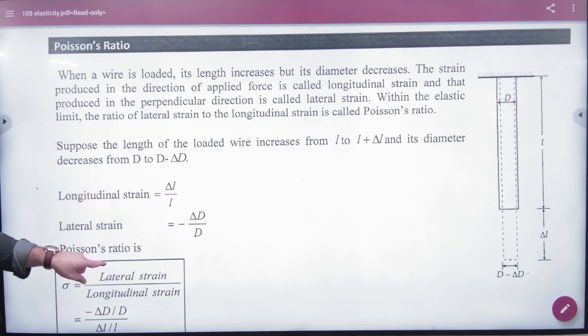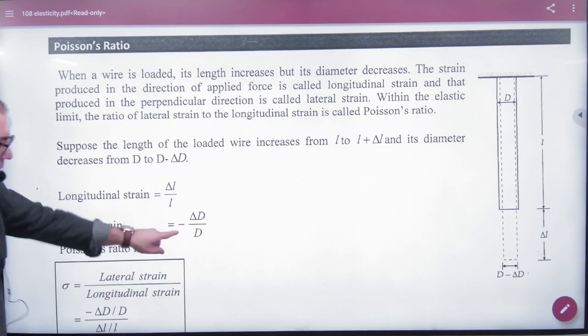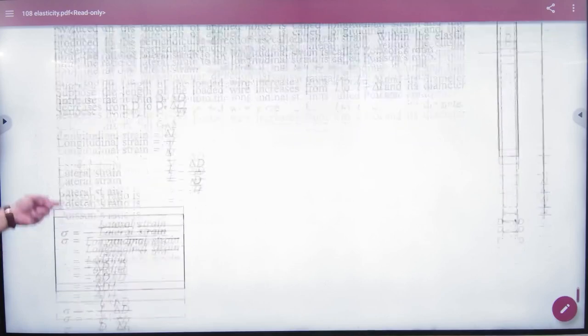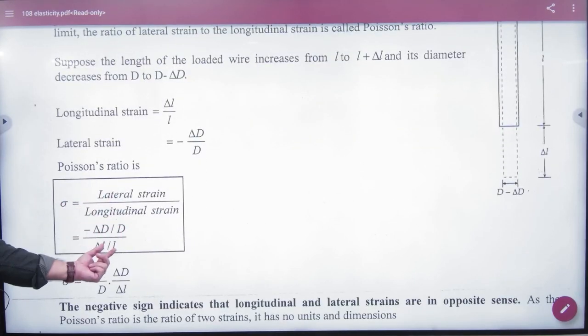What is the strain of the length? Longitudinal strain. And what is the strain of the diameter? Lateral strain. And what is the ratio of the lateral and longitudinal strain? Poisson's ratio. So this is the Poisson's ratio.